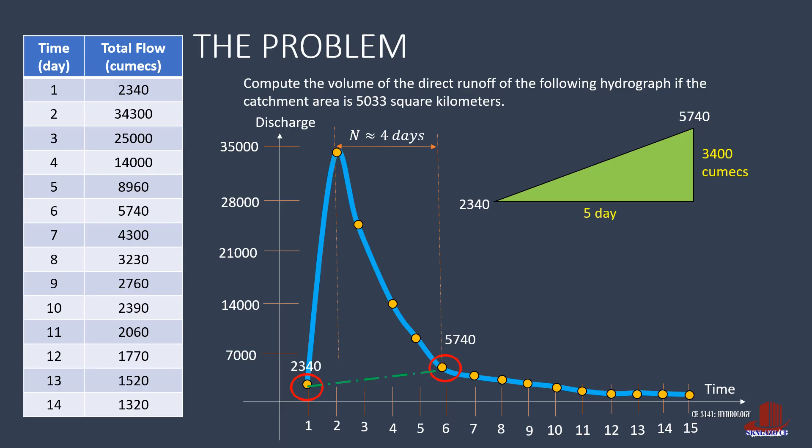Then the x distance is for 5 days. So, if we wish to look for the per day increment, y is just the full height divided by 5. That's 3400 over 5, which gives 680 cumecs per day. With this figured out, we can then define the base flow per day.